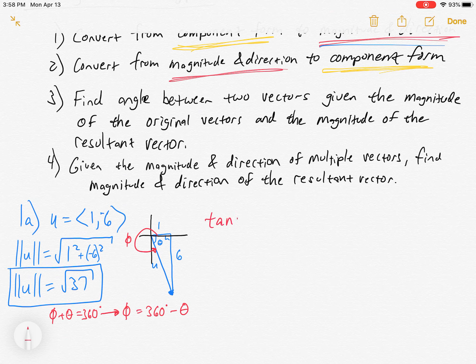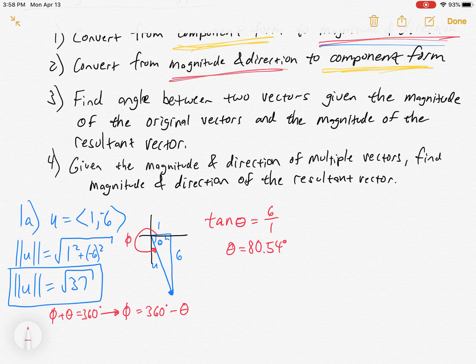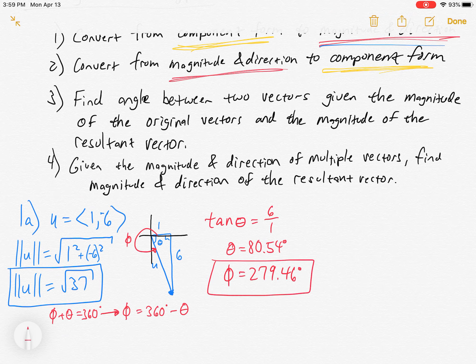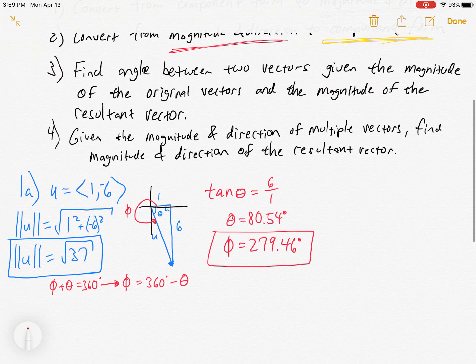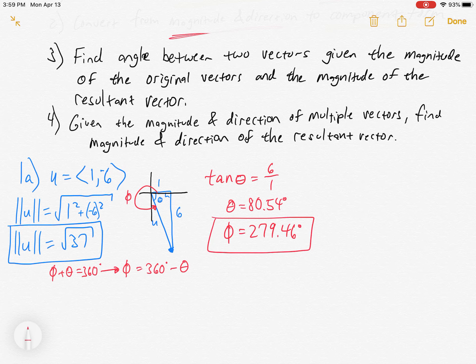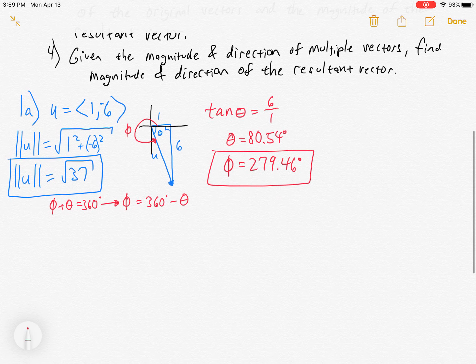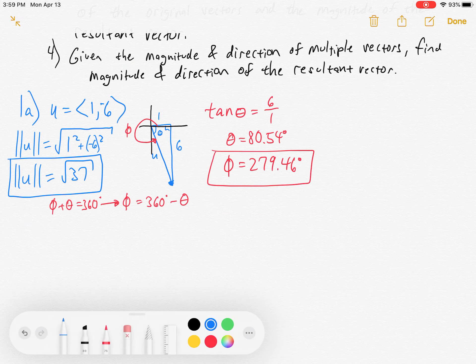We're going to use a tangent, which you'll use on every one of these problems. Tangent of the unknown theta equals 6 over 1. Using a calculator, I'm getting 80.54 degrees. Therefore, phi is 279.46 degrees. In this context we're not doing bearings — we're just measuring the positive angle from the positive x-axis.